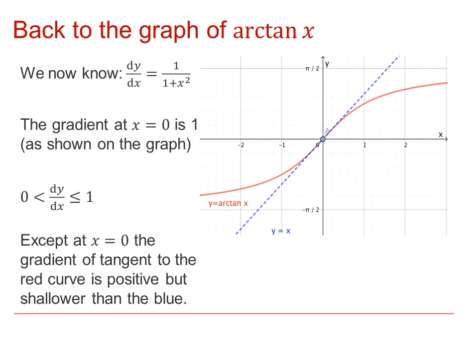Well, we now have that the derivative is equal to 1 over 1 plus x squared. And if we put in x equal to 0 there, then we get that the derivative at the origin is equal to 1. Or in other words, this tangent at the origin here is y equals x. Clearly, as x increases, 1 plus x squared increases, and therefore the derivative is getting smaller and smaller.